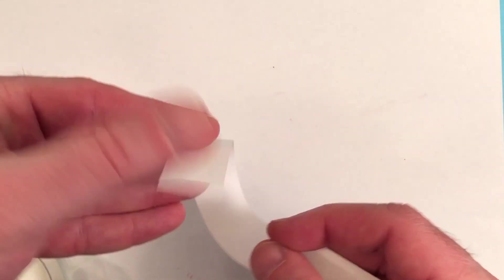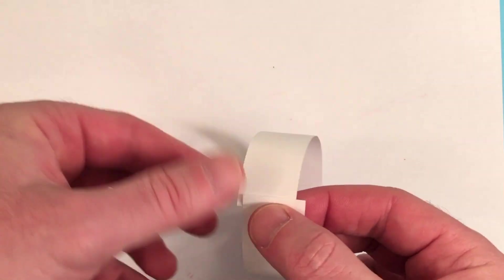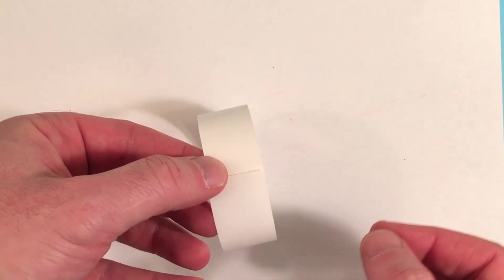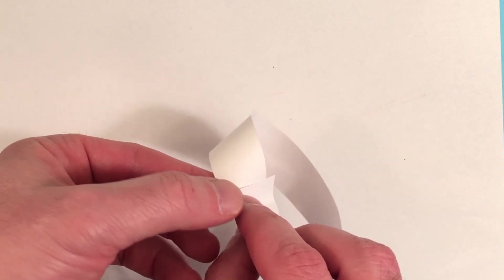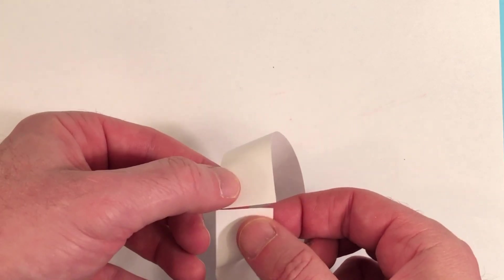Let's do this again. Except this time, before you tape the ends together, take the edge and flip it upside down, in effect giving a half twist to the ring.